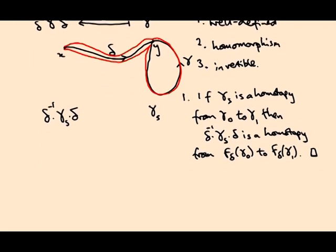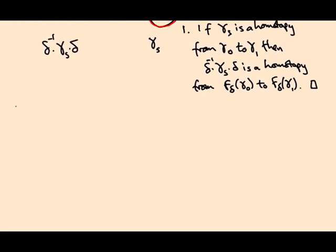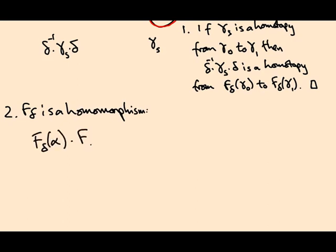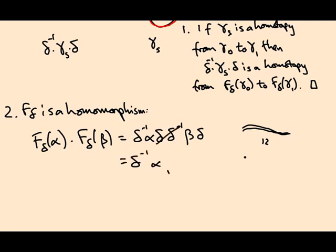If I want to say it's a homomorphism, that's not too hard right? So let's see, f_delta is a homomorphism. All I need to do is to say f_delta applied to alpha concatenated with f_delta applied to beta is delta inverse alpha delta, delta inverse beta delta. The delta and the delta inverse cancel, so I go along delta and then back again, that's homotopic to the constant path. So these cancel and I get delta inverse alpha beta delta which is f_delta of alpha beta.